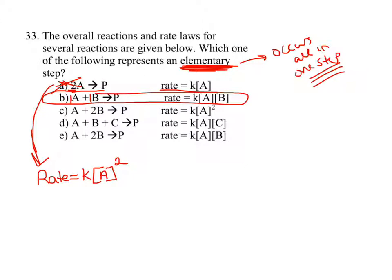C would not be correct — for C as an elementary step, it would be rate equals k times [A] times [B]^2, not what's given. For D it would need A, B, and C, and for E it would be rate equals k times [A] times [B]^2. None of those other options work. So if you see 'elementary step,' just make the coefficients become the orders. For B, one A particle reacts with one B particle, so it makes sense that the rate depends directly and proportionally on both A and B.